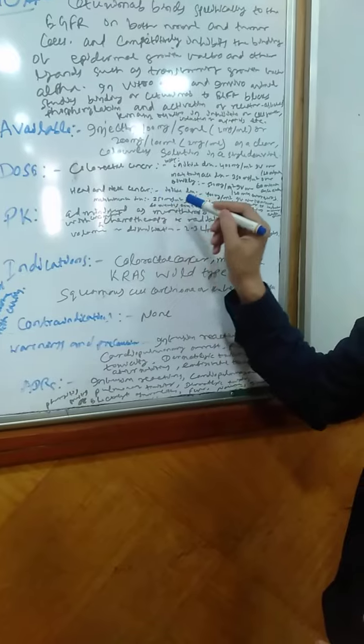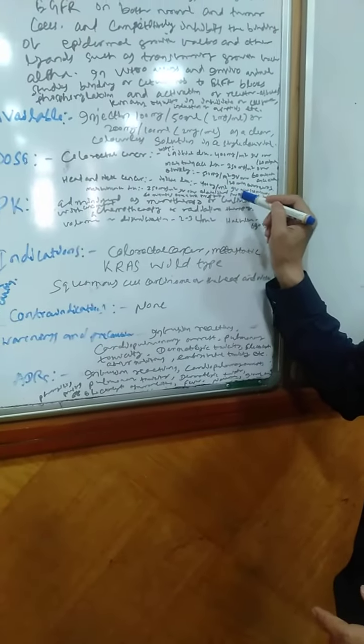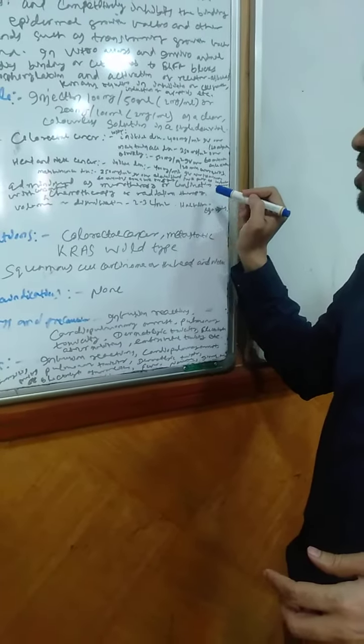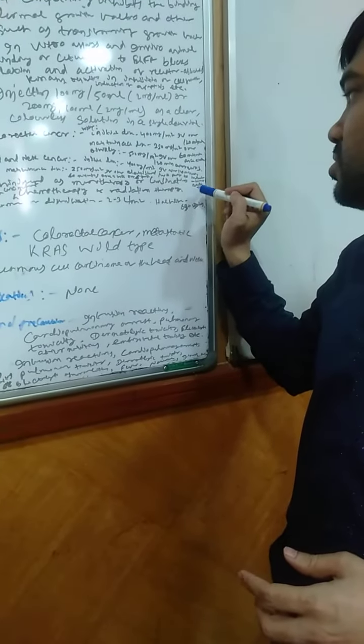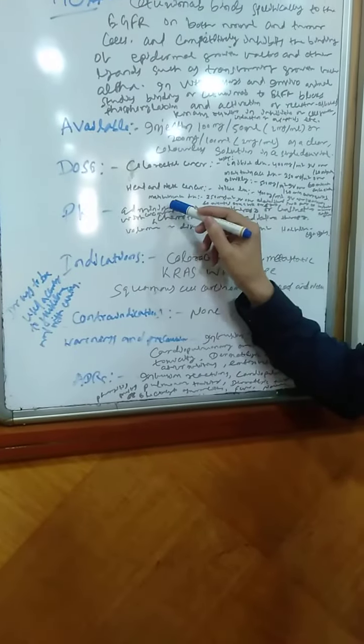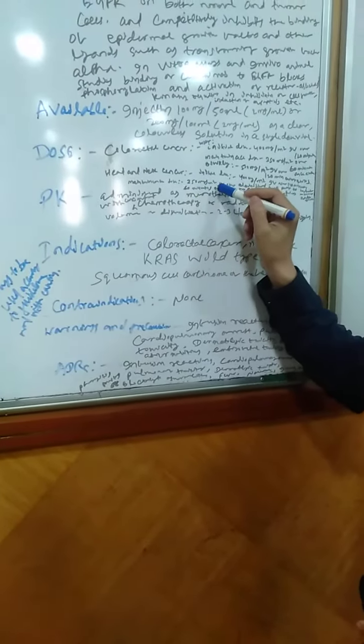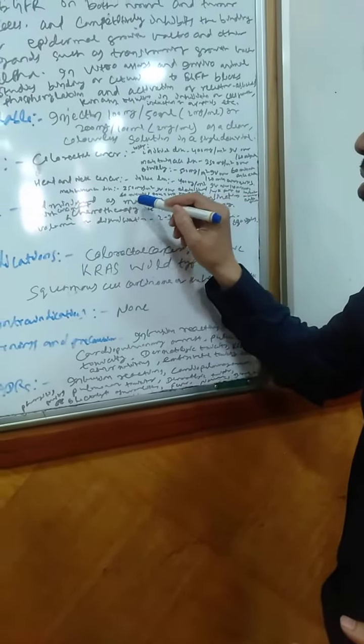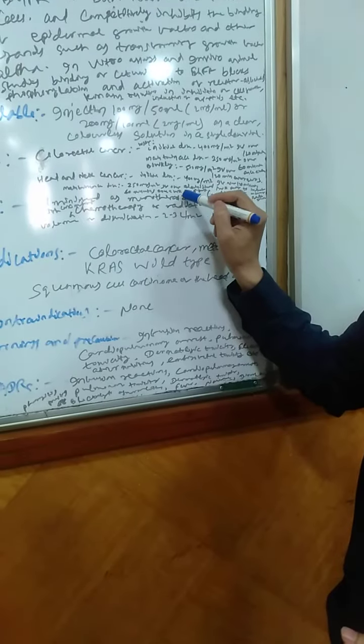For head and neck cancer, the initial dose is given intravenous over 120 minutes initially with radiotherapy, and maintenance dose is 250 mg per meter square intravenous over 60 minutes once a week for 6 to 7 weeks, that is the period of radiotherapy.